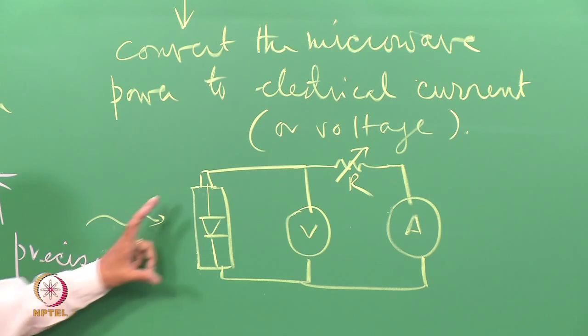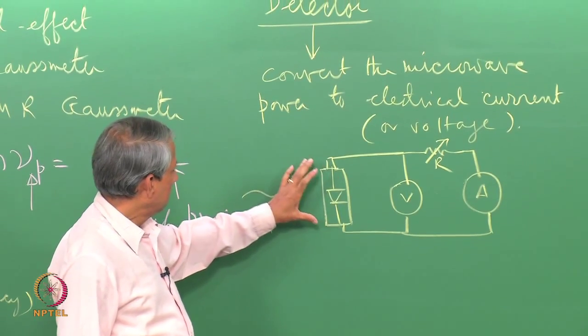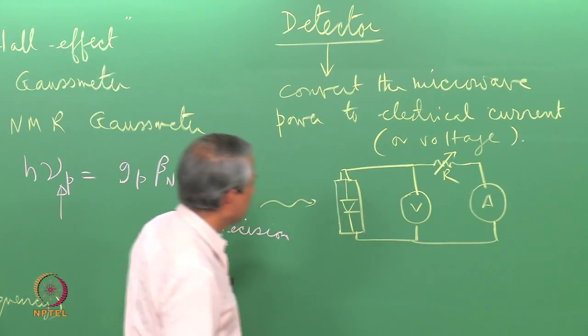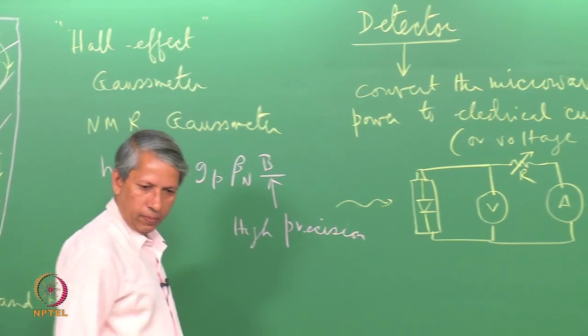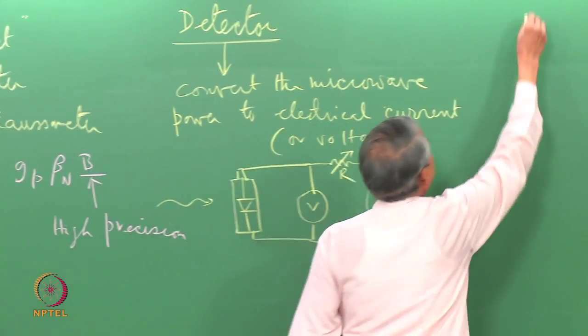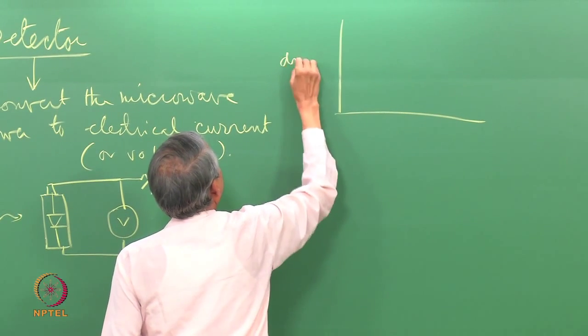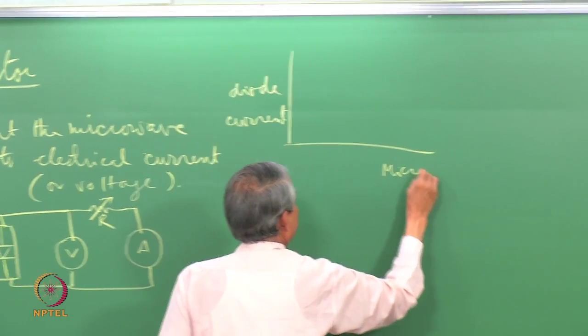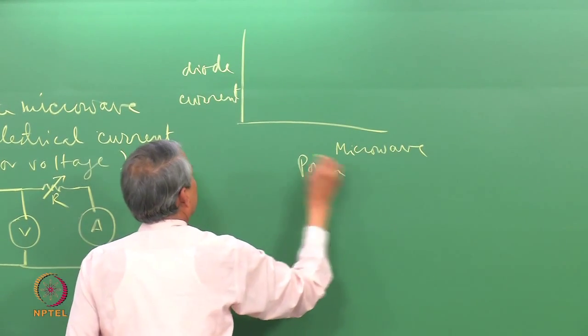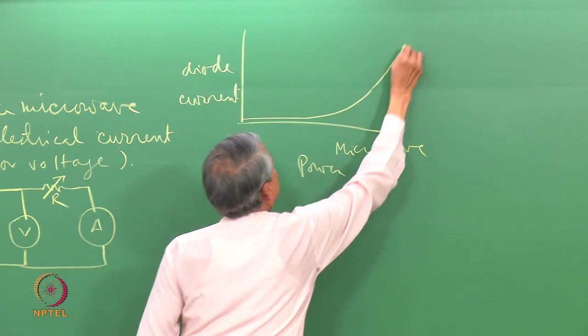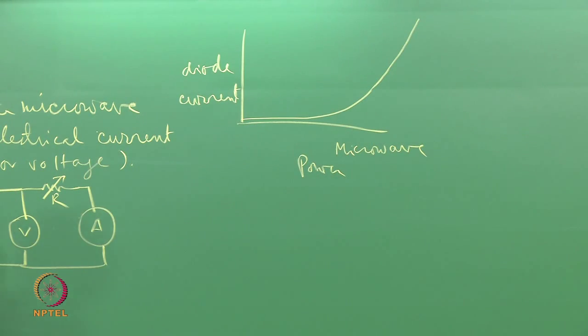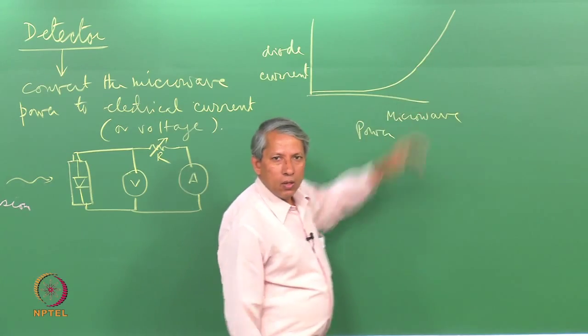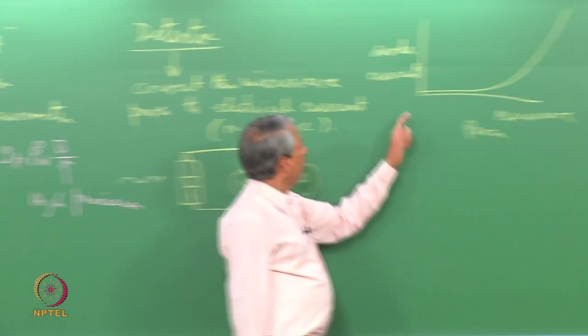Now, the trouble is that this being a diode, it is not a linear device. The current that is generated here because of the microwave power is a very nonlinear function of the power that is falling on the diode. Diode current versus power looks like this type. At a very low level of microwave power, the current is very small, and then as the power increases, it shoots up. So the sensitivity therefore very much depends on where I am working.